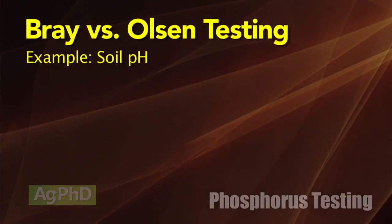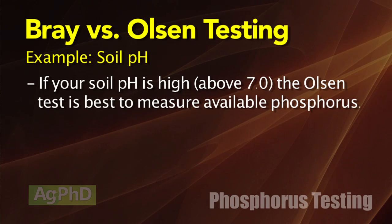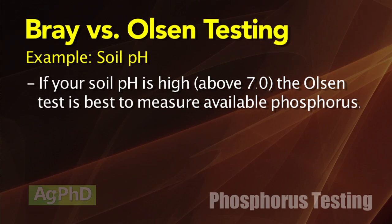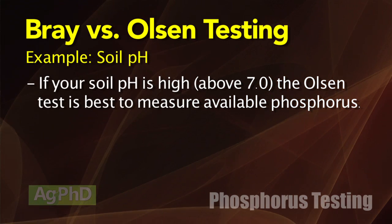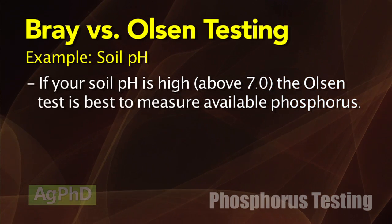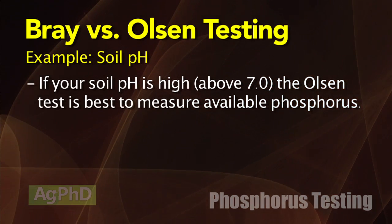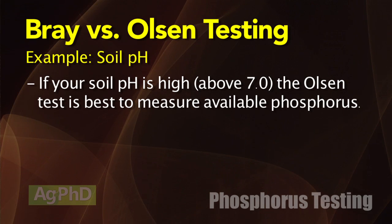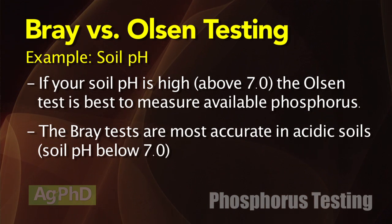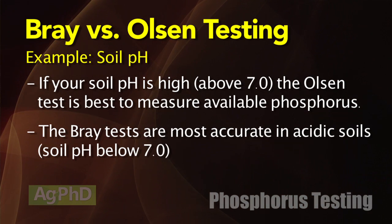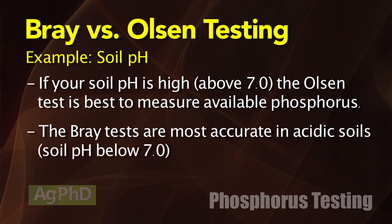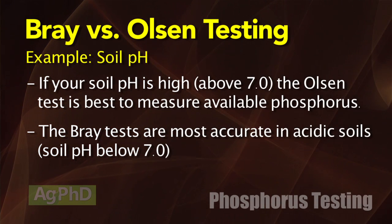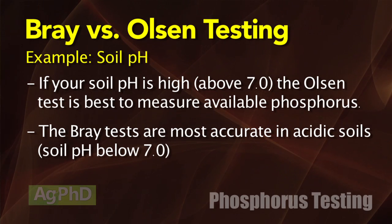Here's an example — soil pH. If you have a very high soil pH, the Olsen tests are a little bit more accurate with how much phosphorus will come available this year. If you have acid soils or pHs lower than 7, the Bray tests tend to be a little bit more accurate.